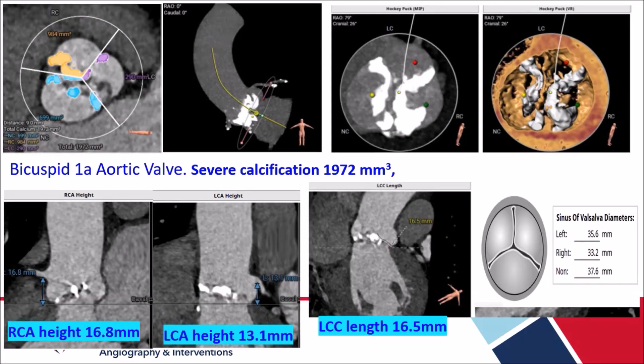CT angiogram showed a bicuspid type 1 aortic valve with severe calcification of 1972 cubic millimeters. Height of the right and left coronary ostia was adequate: left coronary ostium height was 13.1 mm, left coronary cast length was 16.5 mm, adequately dilated sinus of 12 mm, with annulus of 35.6 mm.